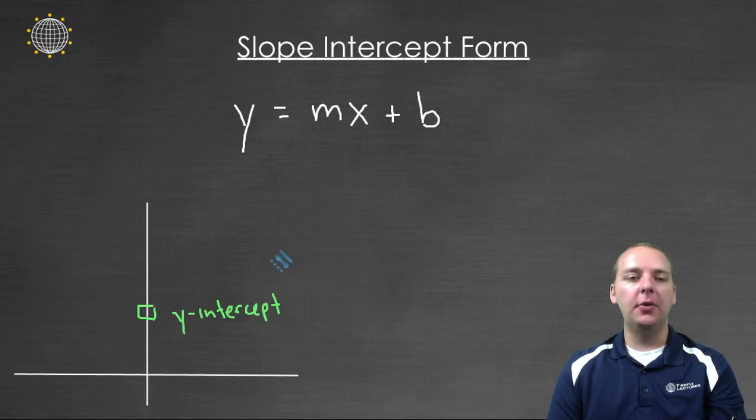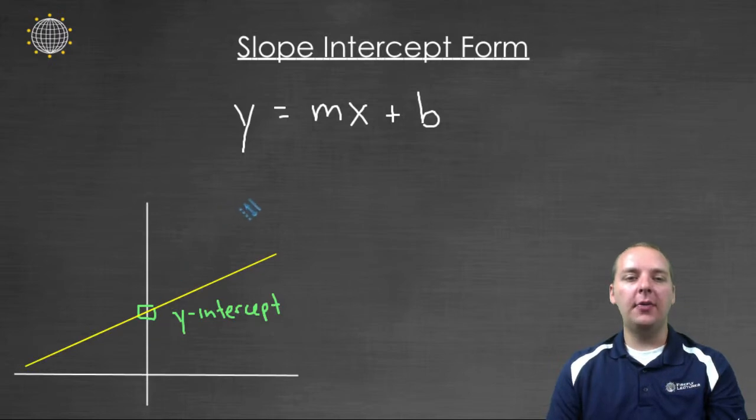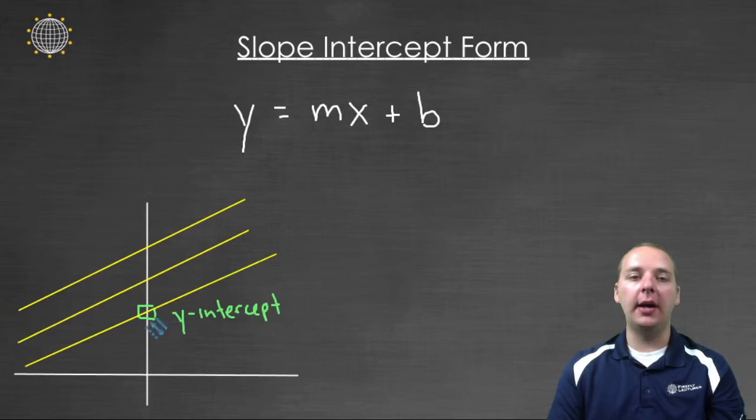Because think about it, if you knew the slope of your line looks like this, but it had to go through this place on the y-axis, there's only one line that can do that. You might have other lines that have the same slope like these, but they would not have the correct y-intercept.